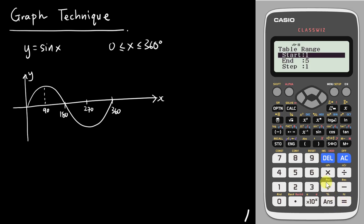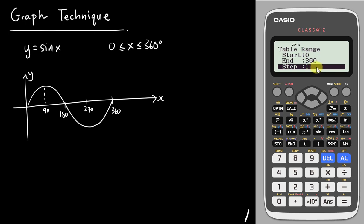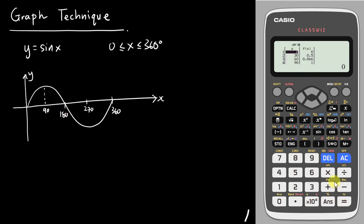Press enter again. Then I tell my calculator I want to range from 0 to 360 — start at 0, end at 360. The step will be the interval. I prefer either 30 or 45, but here I'll use 30 degrees. Using 30 will include 90, 180, and 270. After pressing enter, you can see a table. At 90 degrees, sine gives positive 1.